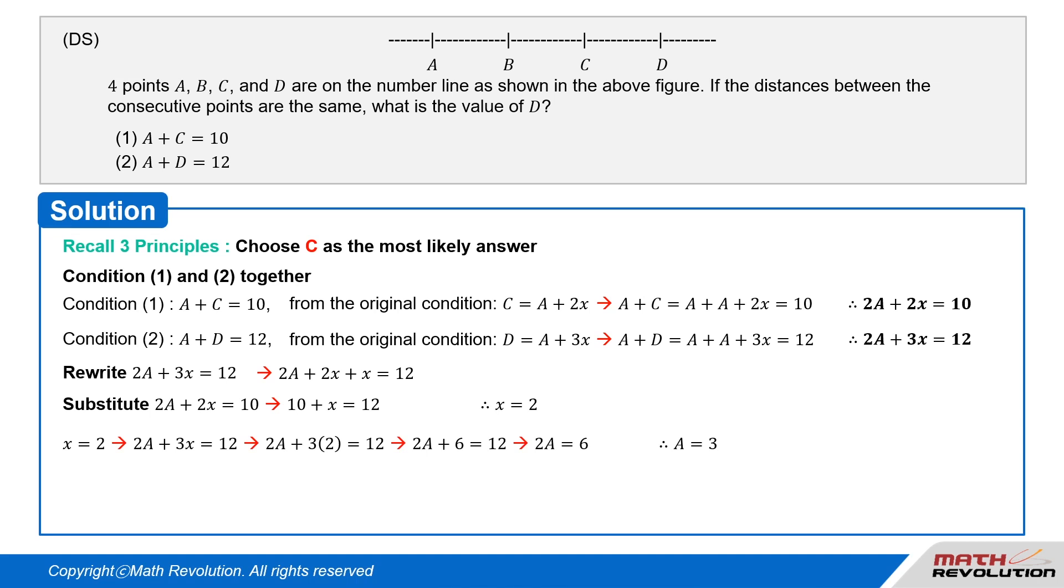We get 2 times A plus 2 times 2 equals 10. 2 times A equals 10 minus 4 equals 6, or A equals 3.